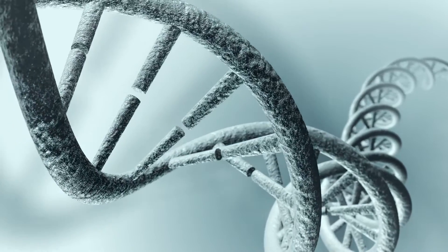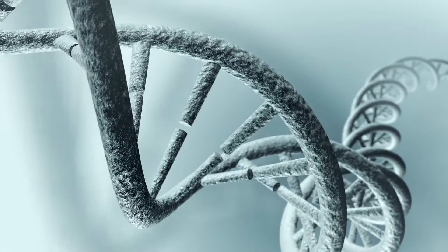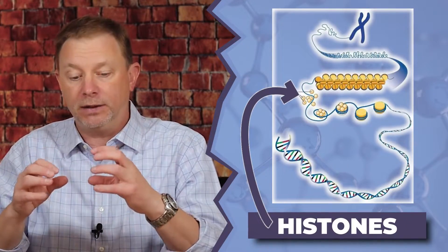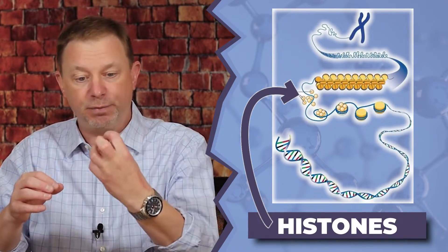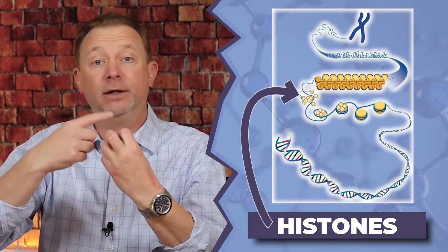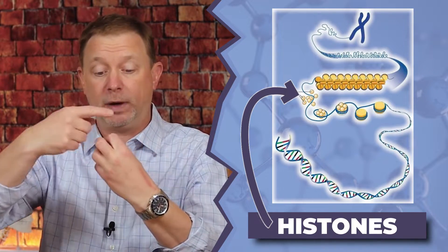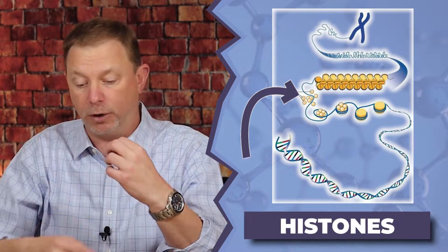How does the methylation cycle work in DNA? Much deeper down into the cell, not at the surface, but deeper in the nucleus — the very core of the cell where the DNA is — the long length of DNA is wrapped up. It's bound up into histones, and histones are like little tennis balls that the DNA strand is wrapped around, like Velcro around a tennis ball.